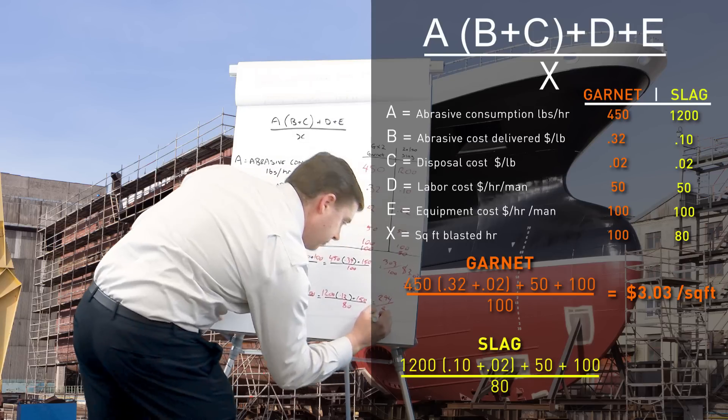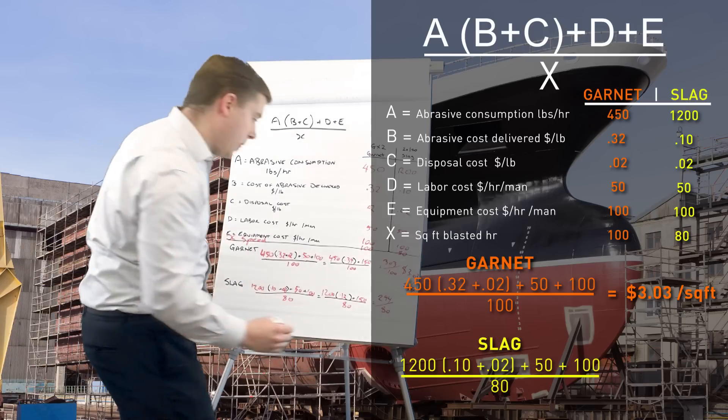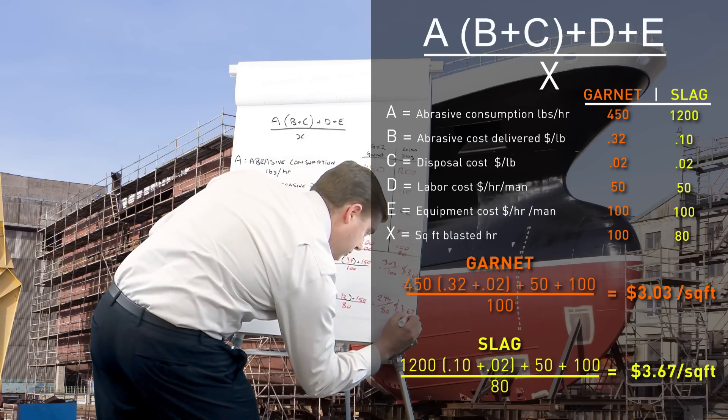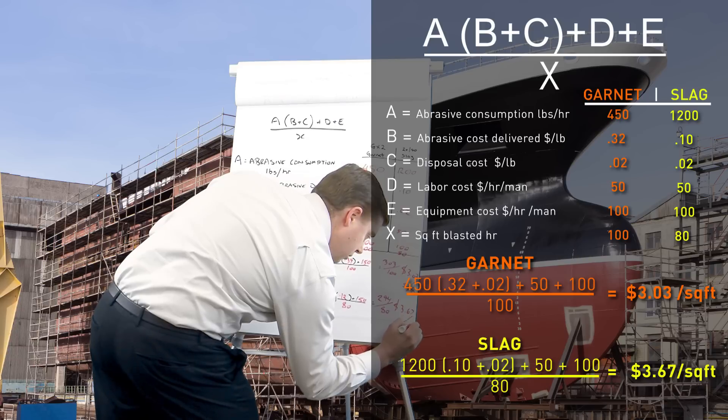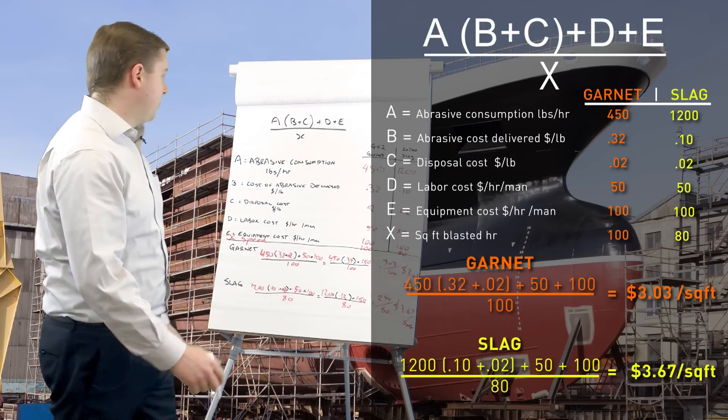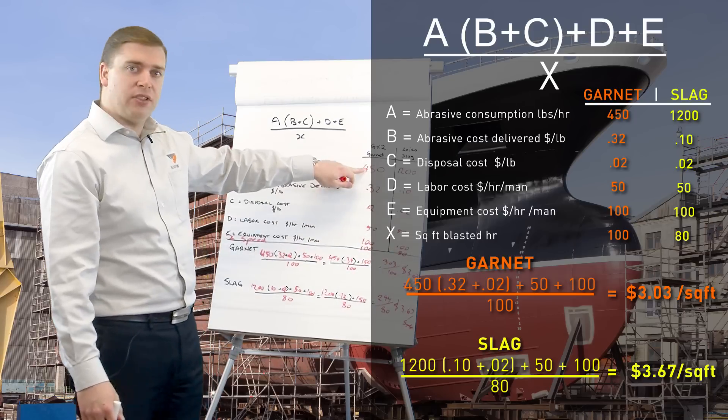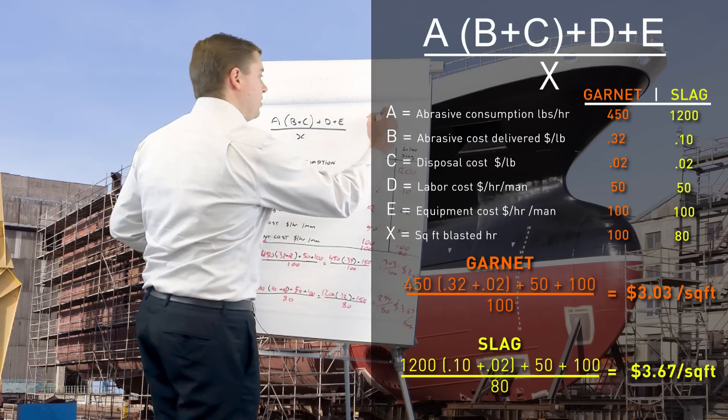So there you have it. We're using an abrasive which costs us three times the price, blasts 20% faster, uses half as much and we have a 21% savings.